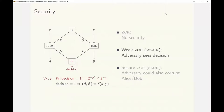Weakly Secure ZCR or WZCR additionally requires that the inputs are hidden from an adversary who can see the decision of the predicate. Hence, the probability with which the predicate accepts needs to be the same for all inputs.